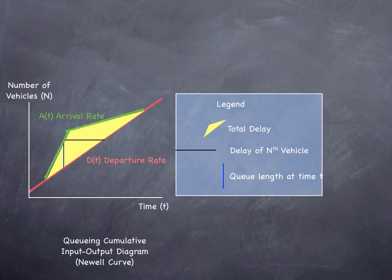This is what's called a deterministic queue. It's deterministic because we know the departure rate and we know the arrival rate.